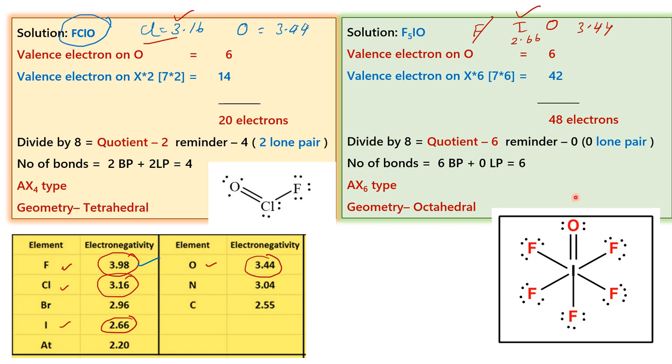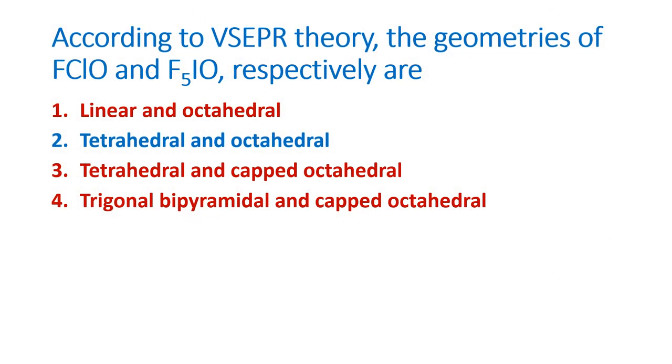If you are asked which among these is central atom, we must remember the most electropositive or the least electronegative element will be the central atom. In this particular question, we have found that the geometry of these two molecules is tetrahedral and octahedral.